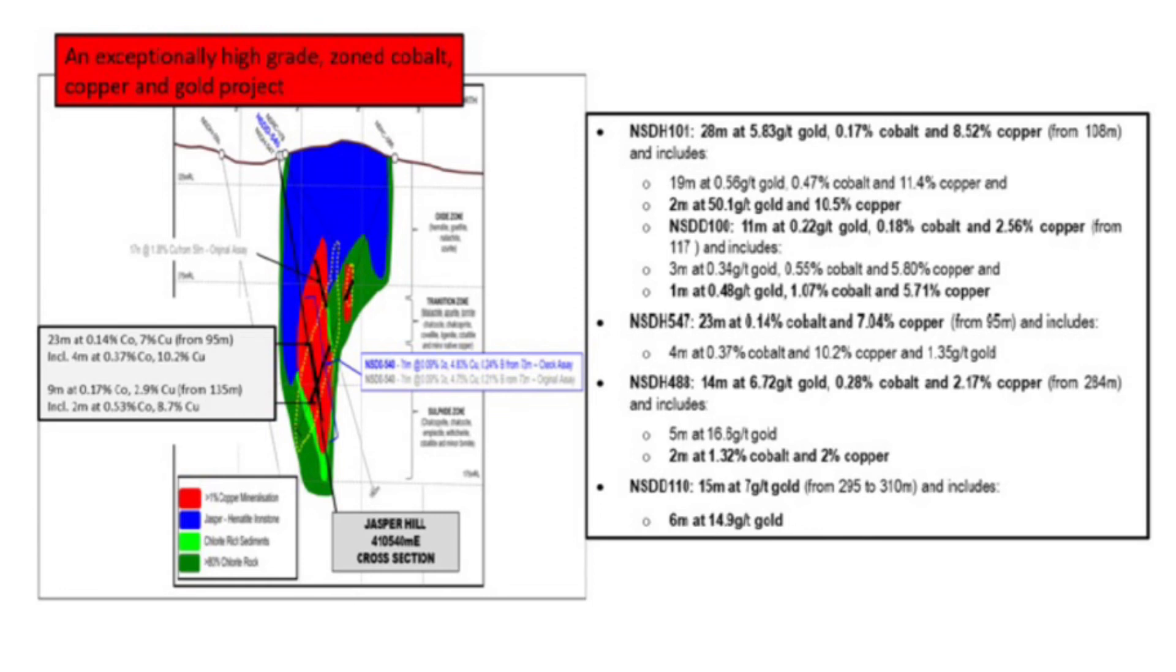And also, once Emerson Resources sorts out native title, they can begin exploration on the Jasper Hills deposit, which has historic high-grade intercepts.